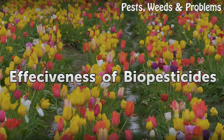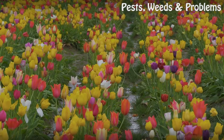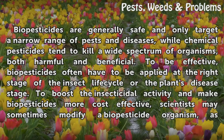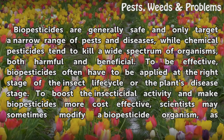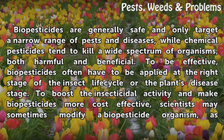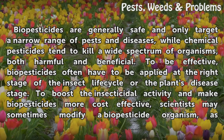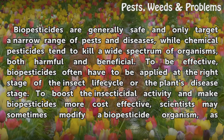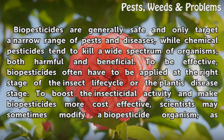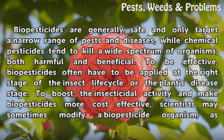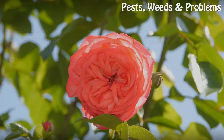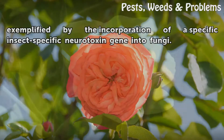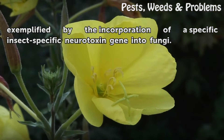Effectiveness of Biopesticides. Biopesticides are generally safe and only target a narrow range of pests and diseases, while chemical pesticides tend to kill a wide spectrum of organisms, both harmful and beneficial. To be effective, biopesticides often have to be applied at the right stage of the insect life cycle or the plant's disease stage. To boost insecticidal activity and make biopesticides more cost-effective, scientists may sometimes modify a biopesticide organism, as exemplified by the incorporation of a specific insect-specific neurotoxin gene into fungi.